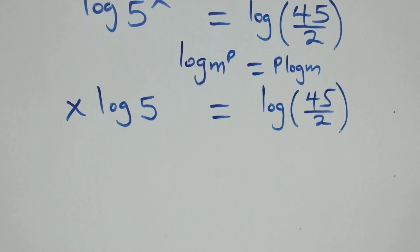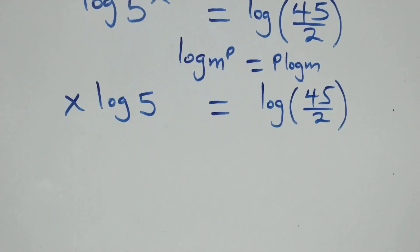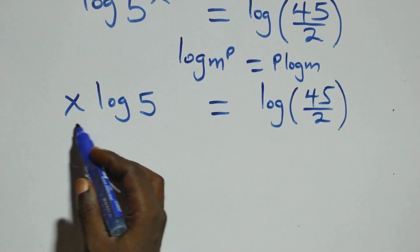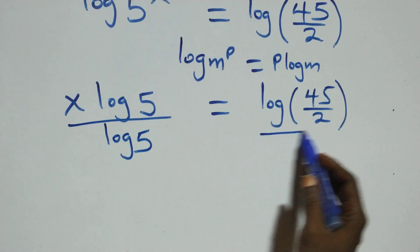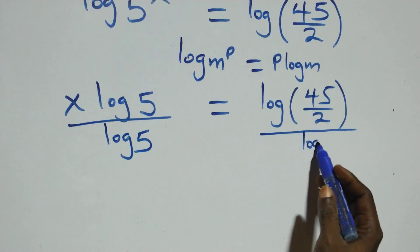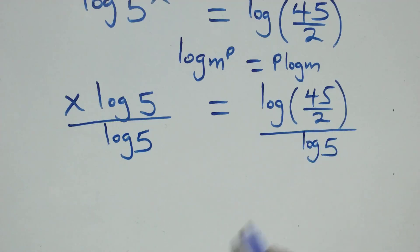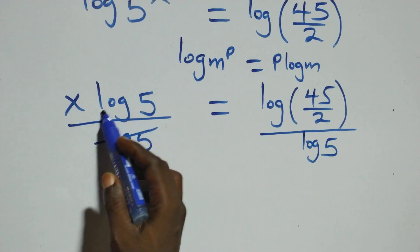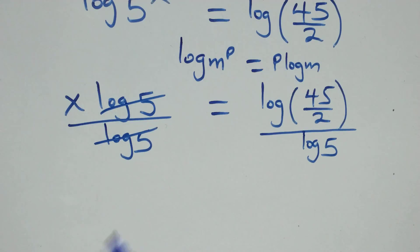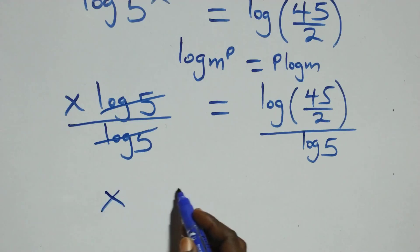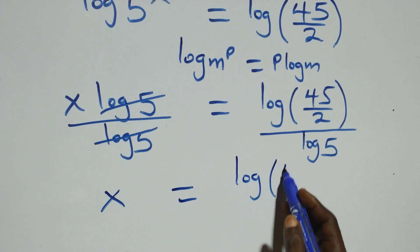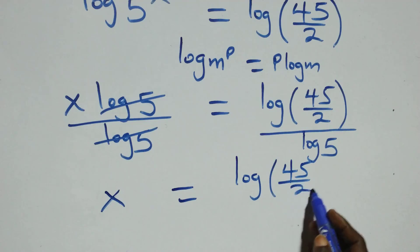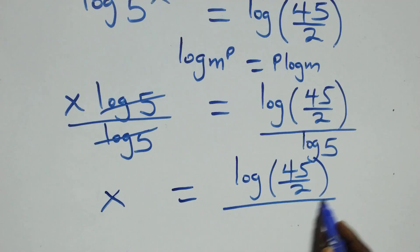Then from here we divide both sides by log 5. Log 5 cancels on the left, and we have x equals log(45/2) divided by log 5.